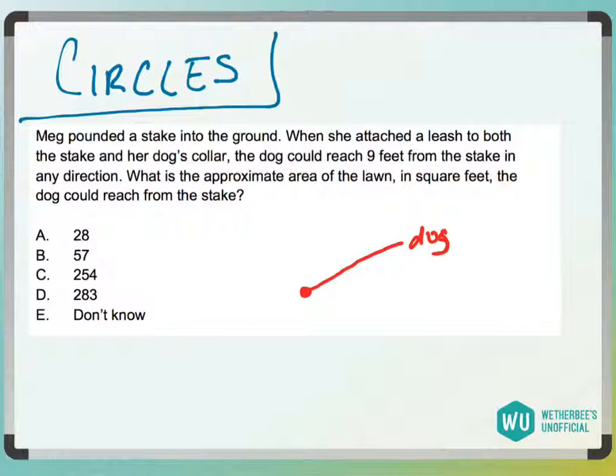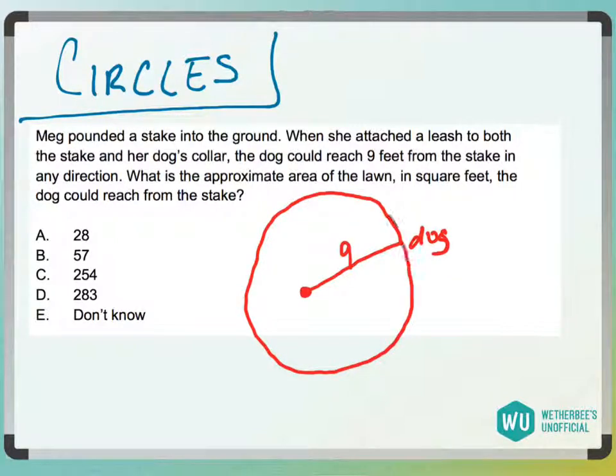The dog could reach nine feet from the stake in any direction. So nine feet. Basically, this is just going to be a circle. It's just going to be a radius of being able to run around, and they want to know the approximate area of the lawn in square feet the dog could reach.